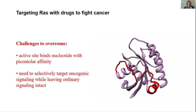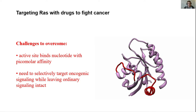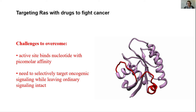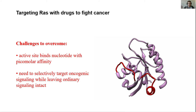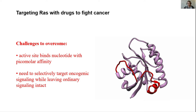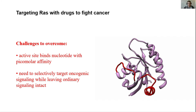Perhaps more importantly, you need to selectively target oncogenic signaling while leaving ordinary signals intact. Lots of cells in your body need RAS signaling all the time — signals that say now it's time to grow. If you found a drug that squashed all RAS signaling, that would be a problem for ordinary cells that rely on wild-type signaling. So how do you target oncogenic signaling specifically?